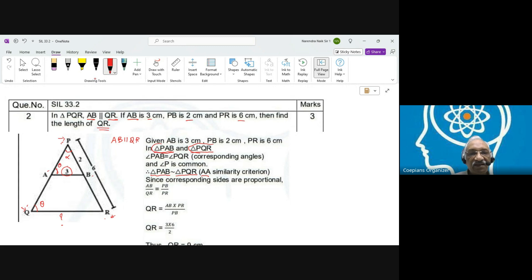We know corresponding sides are proportional. AB upon QR—AB is here, this is AB, and this particular thing is QR—AB upon QR is PB upon PR. PB upon PR. If we cross multiply, AB upon QR.